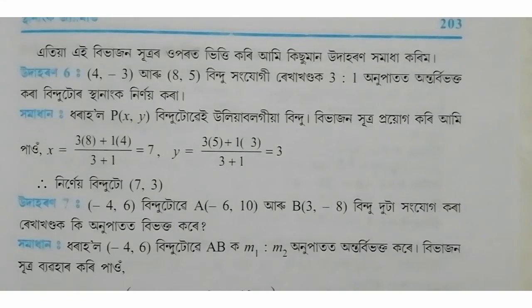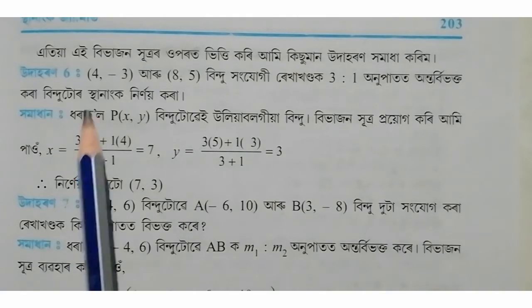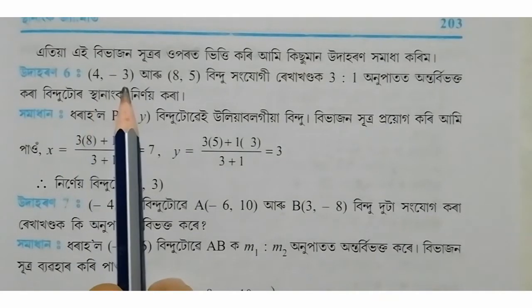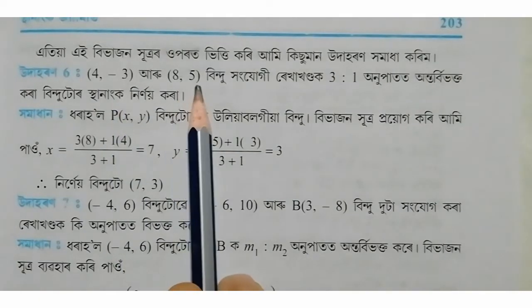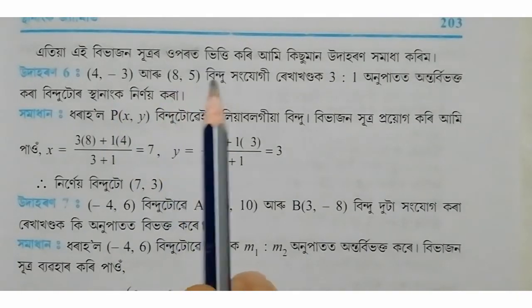Hello students, welcome to my class. We are doing chapter 7, tense chapter — geometrical examples. Example number 6: coordinates given are (4, -3) and (8, 5).